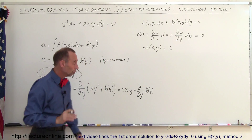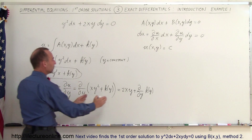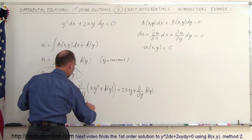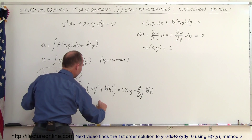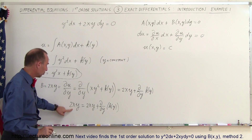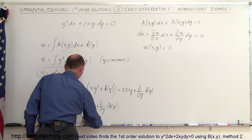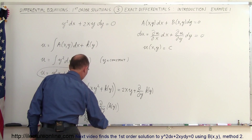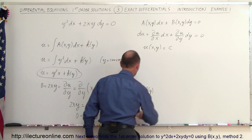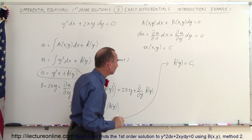We can now set this equal to N, which is 2xy. So we write: 2xy equals 2xy plus the partial of k(y) with respect to y. The 2xy terms on both sides cancel, leaving 0 equals the partial of k(y) with respect to y. If the partial of k(y) with respect to y equals 0, then k(y) must simply be equal to a constant — let's call it C₁.